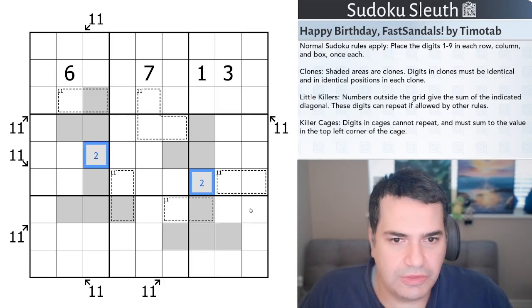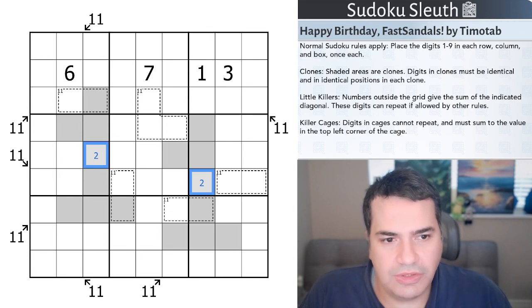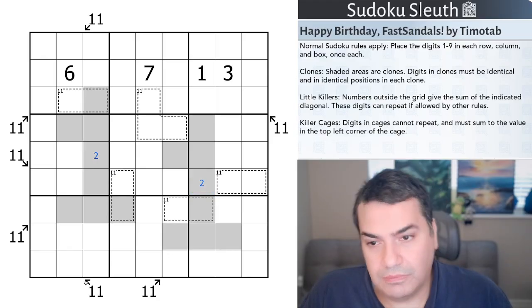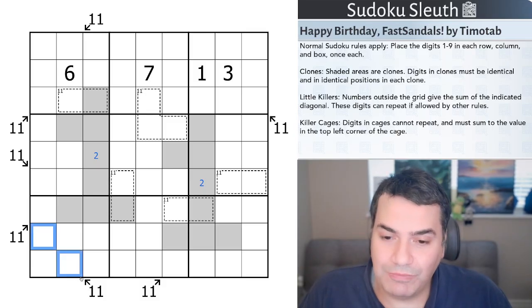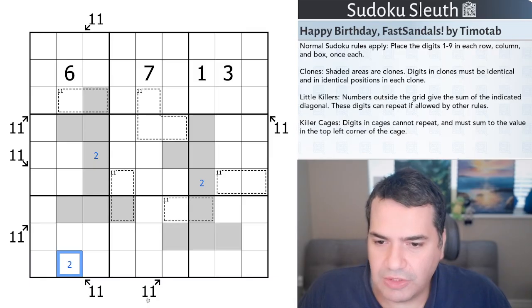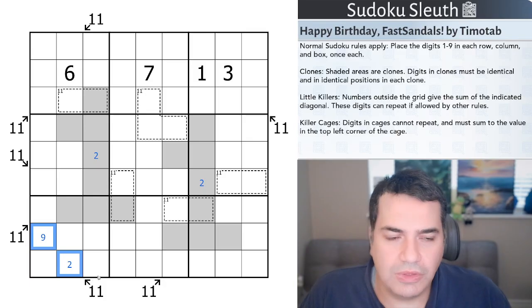Then we have little killers. I'm trying to see if I can spot an easier one. Numbers outside the grid give the sum of the indicated diagonal, and these digits can repeat if allowed by other rules. So for example, and to be fair, they're all saying they're 11. So for example, this little killer cage is saying these two cells add up to 11. If this cell here was 2, this would have to be 9 to make sure that these two cells add up to 11.